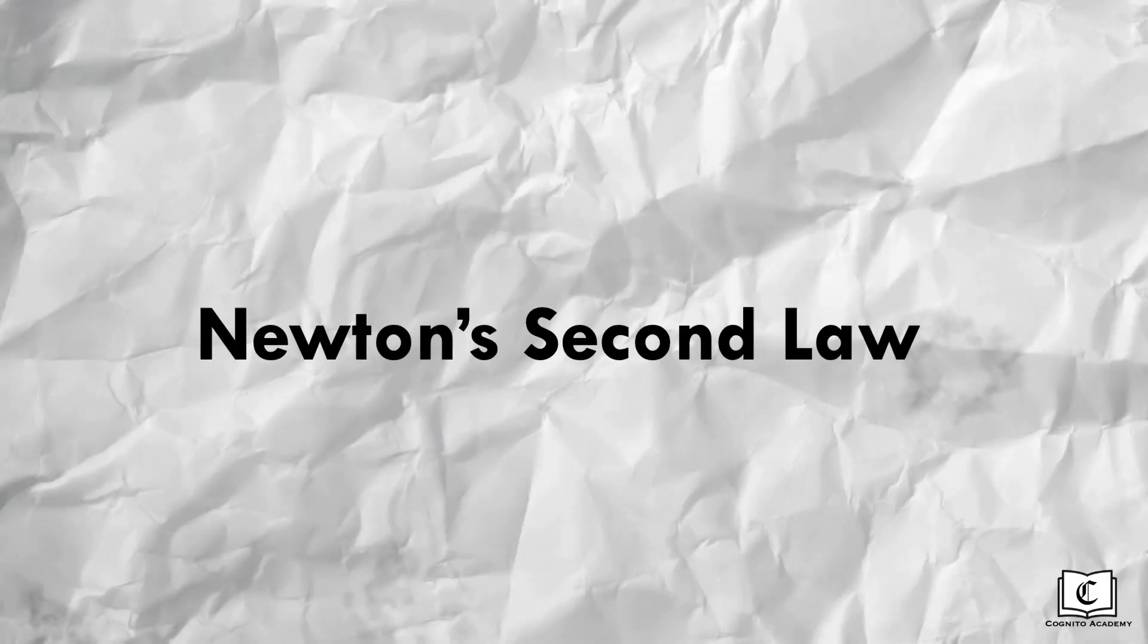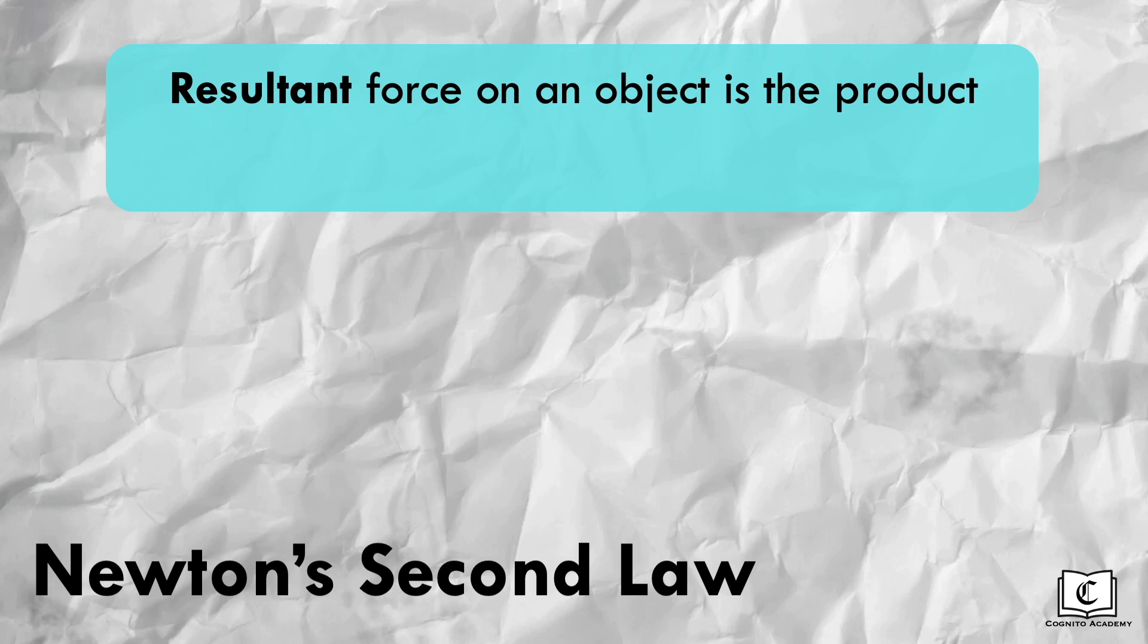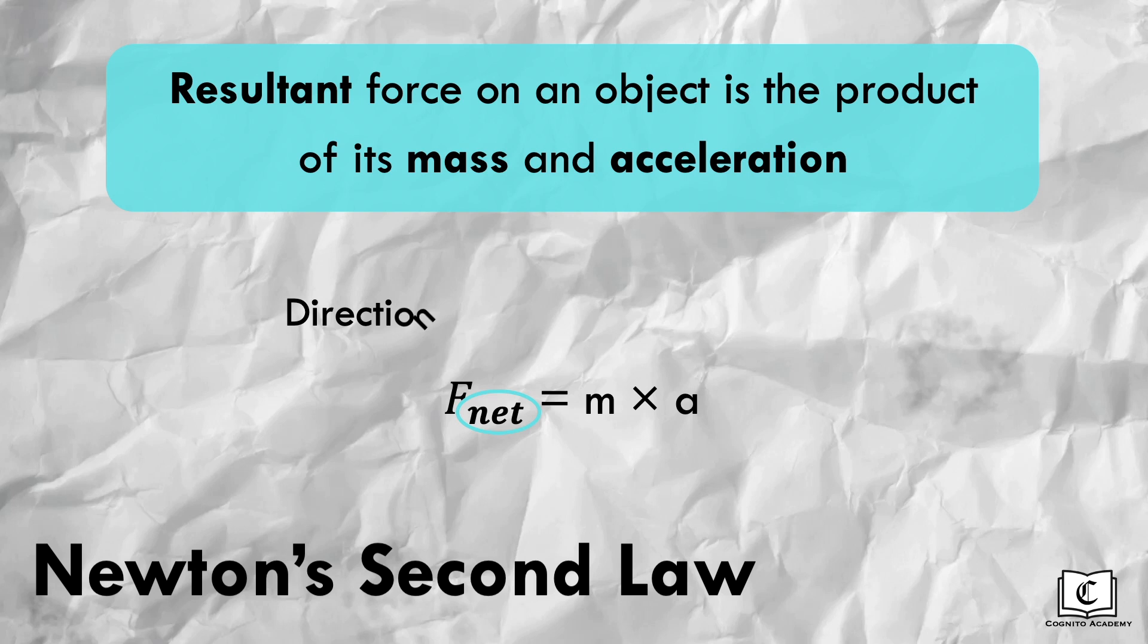Newton's second law of motion states that the resultant force on an object is the product of its mass and its acceleration. I have to emphasize that the force that is causing the acceleration of the object isn't just any force, but the net result or resultant of all the forces acting on the object. The direction of acceleration of the object follows the direction of the resultant force on the object.